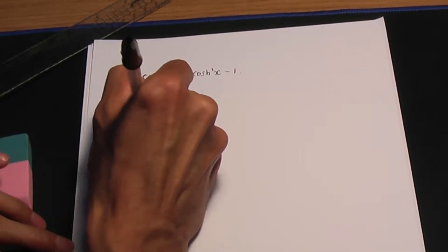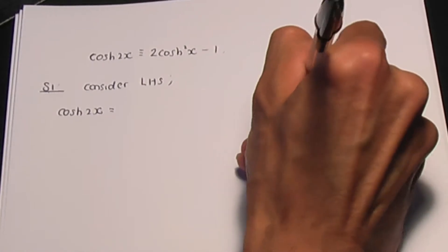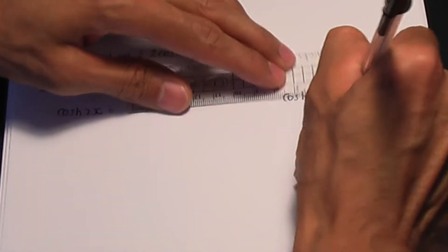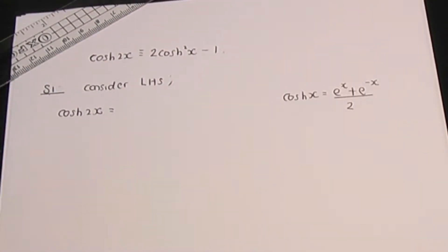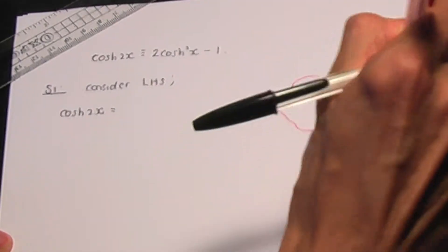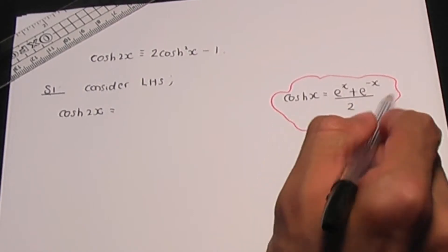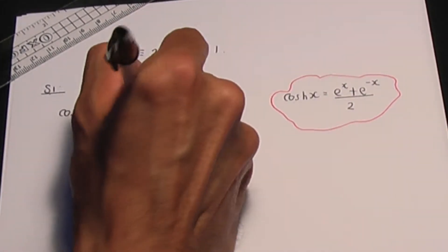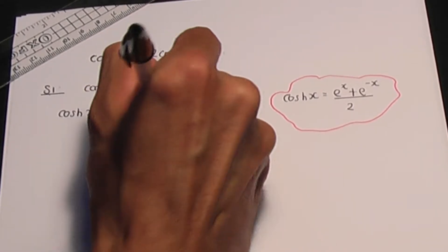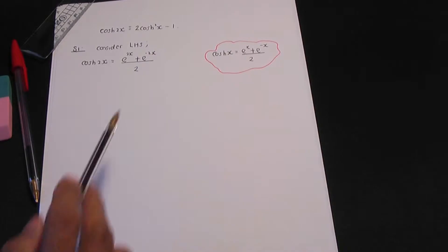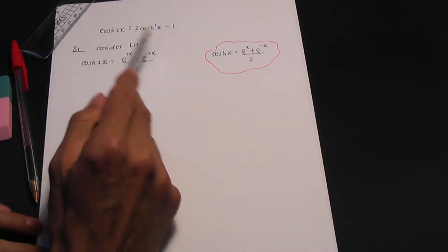The left hand side reads hyperbolic cos(2x). Remember the definition for hyperbolic cos(x) is e to the x plus e to the minus x, all over 2. If I simply replace the x's in this definition by 2x, I get e to the 2x plus e to the minus 2x, divided by 2. That is what we have on the left hand side.